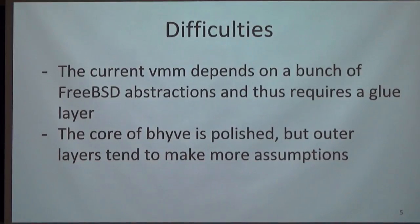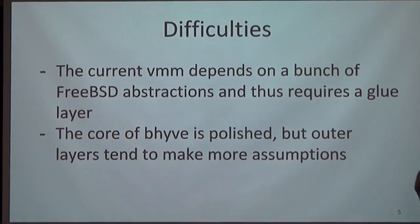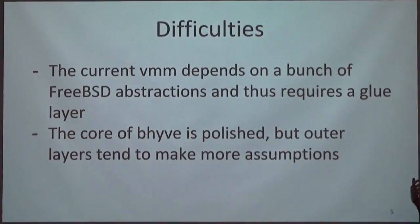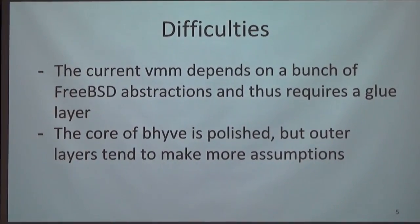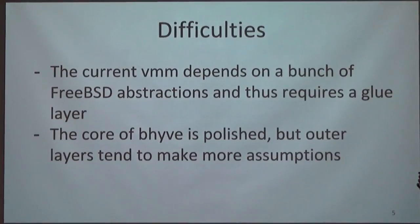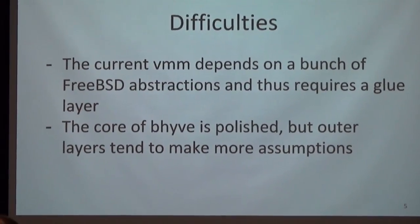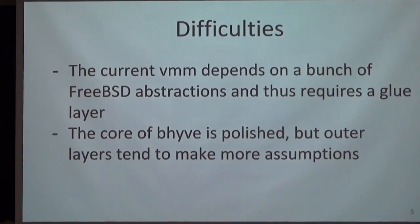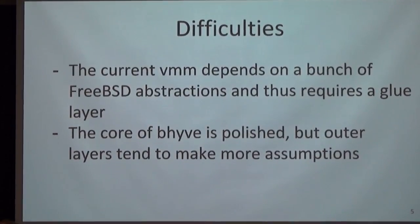There have been a couple of difficulties. The current Beehive depends on a bunch of FreeBSD abstractions, and it's been tough to translate all of those. There's a glue layer, and Patrick is a little worried that this glue layer is going to have to grow over time. He called it an impedance mismatch — something that over time may get harder and harder to support.